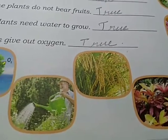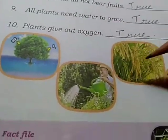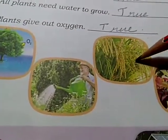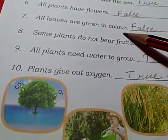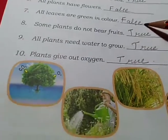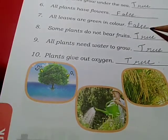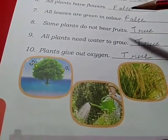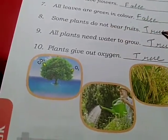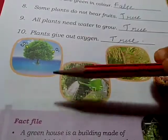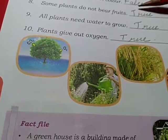All plants have flowers. No, this is false. Some plants do not have flowers. All leaves are green in color. This statement is false. All leaves are not green in color — some are, some are not. Some plants do not bear fruits. Yes, true. All plants will not give fruits; some plants do not bear fruits. This statement is true.